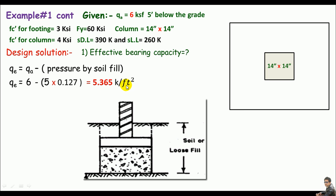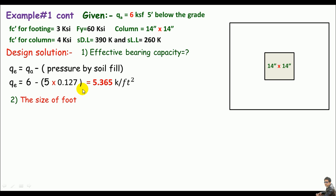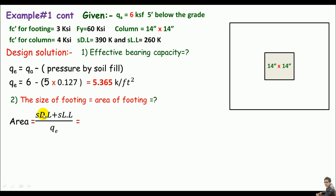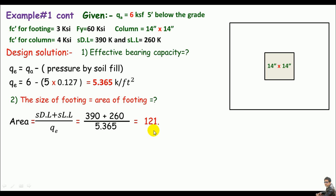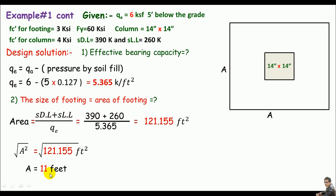Step two: calculate the required footing area. Area = (service dead load + live load) / effective bearing capacity = (390 + 260) / 5.365 = 121.155 square feet. Since the footing is square with side A, A² = 121.155, so A = √121.155 = 11 feet. So one side of the square footing is 11 feet.